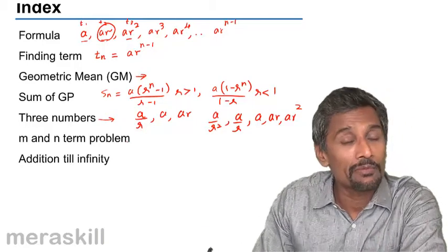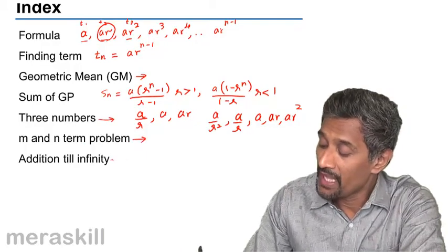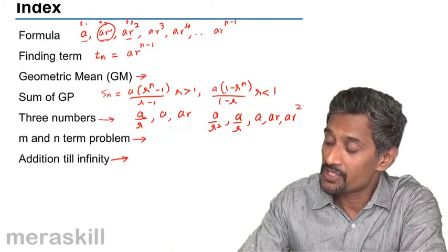Then an M and N type of problem, which we did even in case of arithmetic progression, and addition till infinity. That means this is especially valid when R is less than 1.